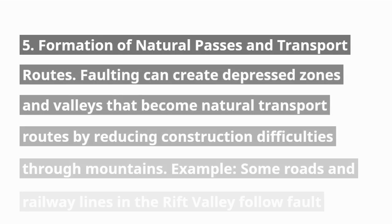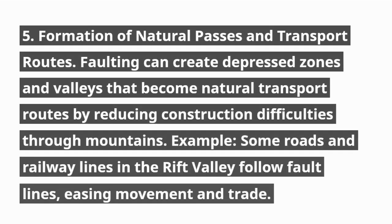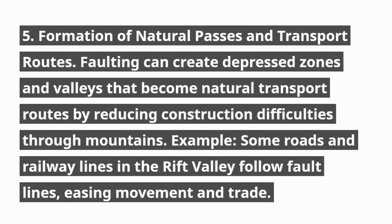5. Formation of Natural Passes and Transport Routes. Faulting can create depressed zones and valleys that become natural transport routes by reducing construction difficulties through mountains. For example, some roads and railway lines in the Rift Valley follow fault lines, easing movement and trade.